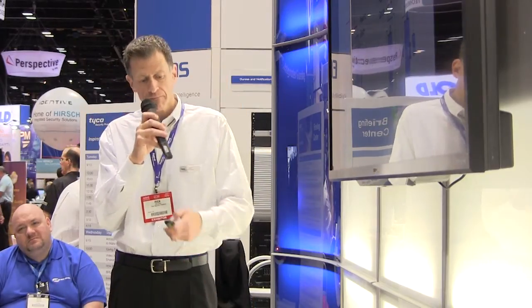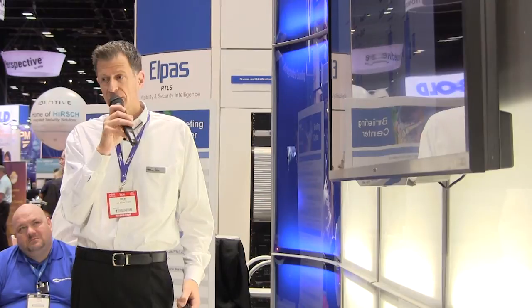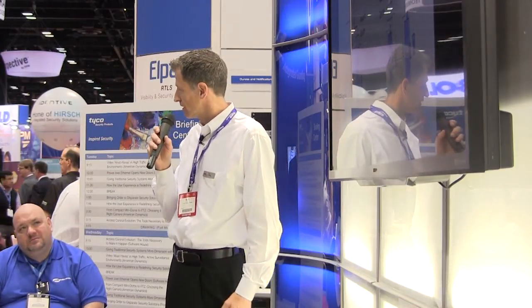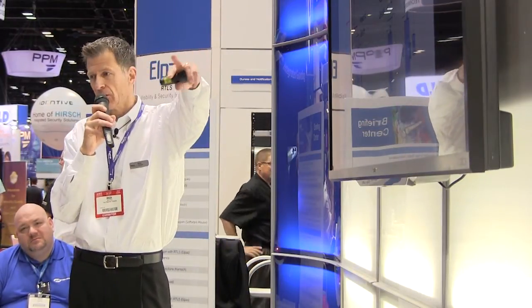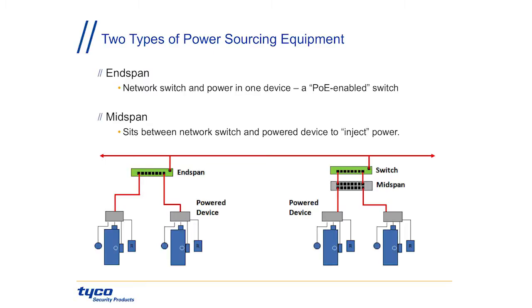Most major manufacturers have these types of switches — Cisco, Netgear, HP. For new jobs, it's great: one device does it all. For retrofits, though, you might have existing switches or network gear. In that case, you can provide a midspan in between the switch and the powered devices to inject the power. You can get these in one-port, four-port, 12-port, or 24-port devices, and they provide really nice, reliable power. For retrofits, use midspans; for new projects, endspans are probably a little more efficient.